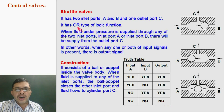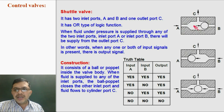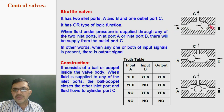This is OR logic function. The construction is simple. It has a ball or puppet inside the valve body. This ball or puppet will move because of the pressure of the working fluid. If the working fluid is given to A, then the ball will shift towards B and it will close port B, and it will allow fluid flow to port C.